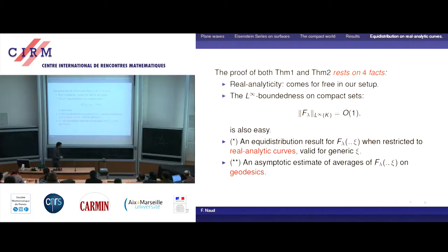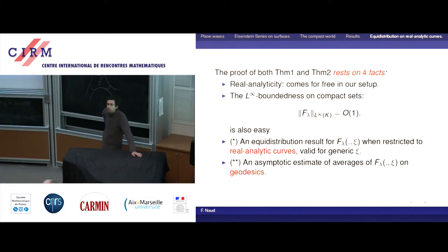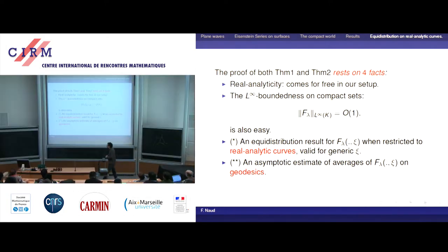Now I want to give an overview of the proof. There are some very important ingredients here that come basically for free — the first two ones. To prove the first result (the second result is based on the first), there will be several ingredients. The first two are given for free in this setup.